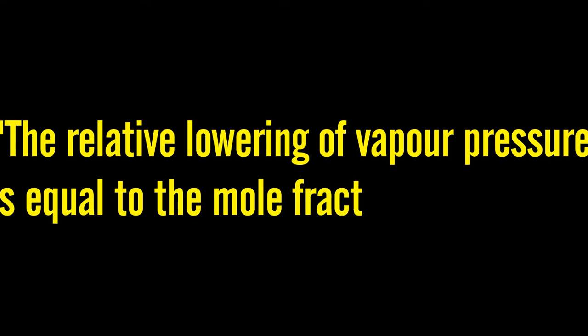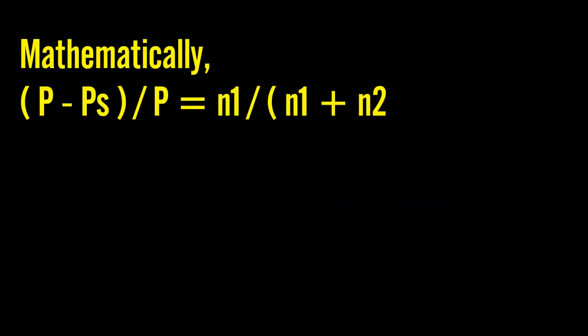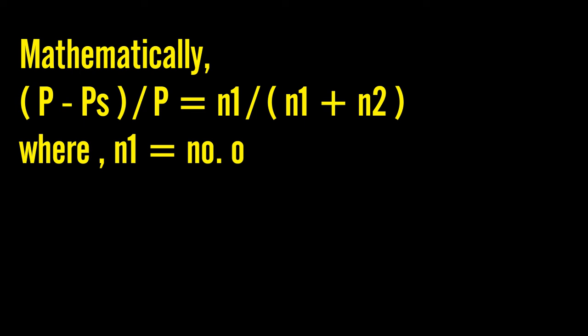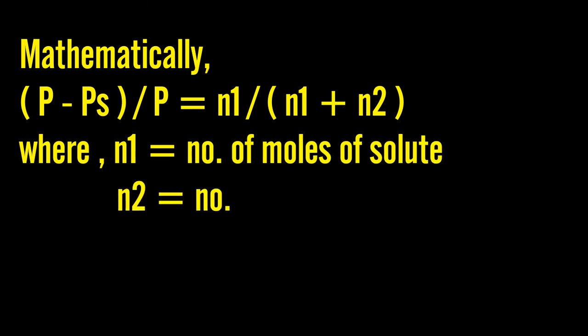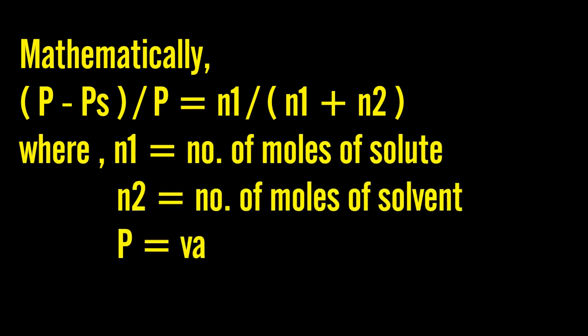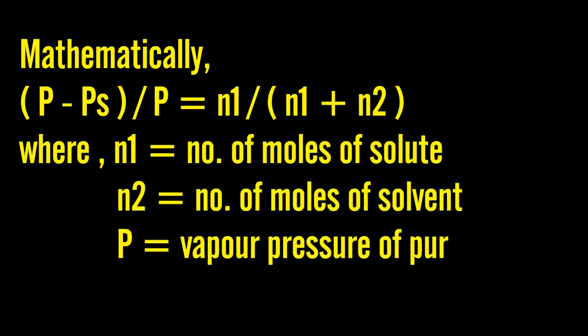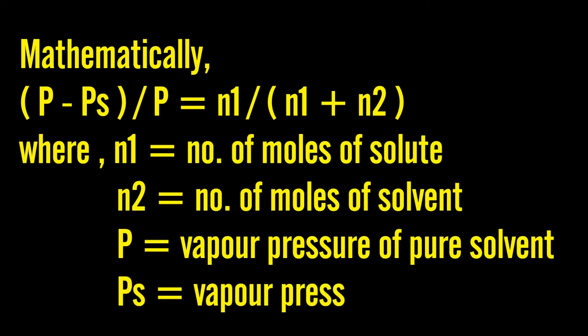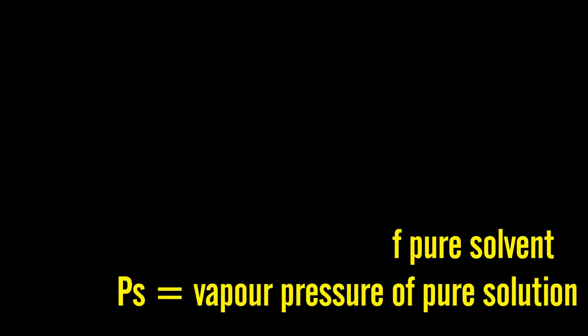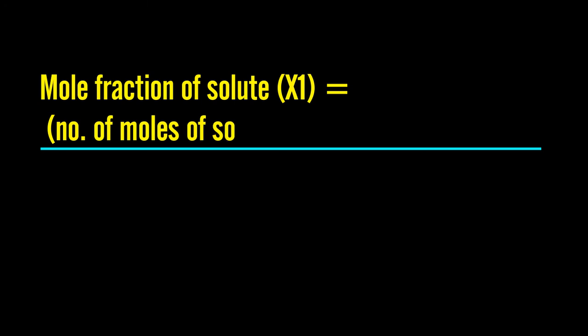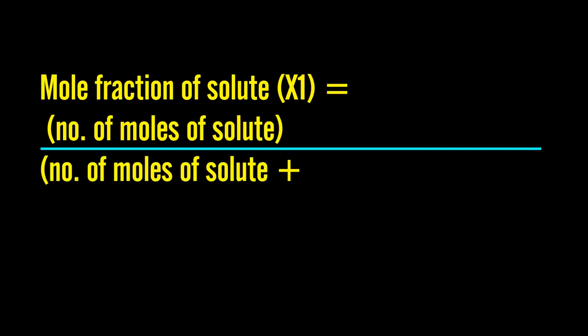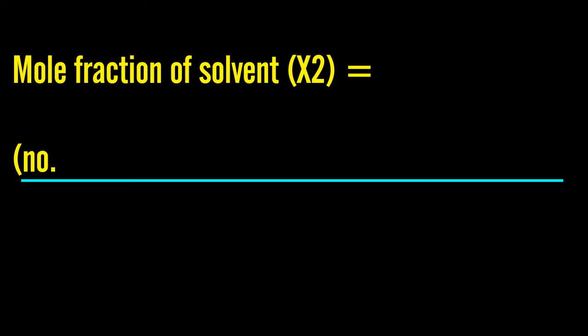It states that the relative lowering of vapor pressure is equal to the mole fraction of solute. Mathematically, where n1 equals number of moles of solute, n2 equals number of moles of solvent, P equals vapor pressure of pure solvent, Ps equals vapor pressure of solution, and mole fraction of solute equals n1 divided by (n1 plus n2).